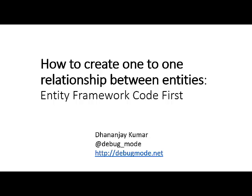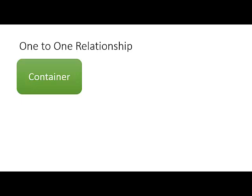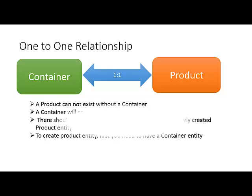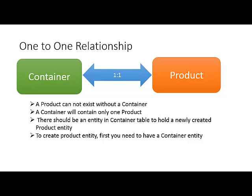In this video we learn how to create a one-to-one relationship between entities when we work with Entity Framework code first approach. Let us consider that we have a container table and a product table. Both these tables are in a one-to-one relationship, so a row in the container table will be related to a particular row in the product table and vice versa. To simplify it further, a product cannot exist without a container. There should be an entry in the container table to hold a newly created product entity — to create a product entity, you first need to have a container entity.